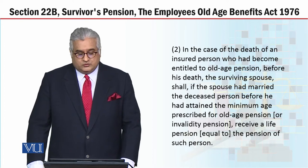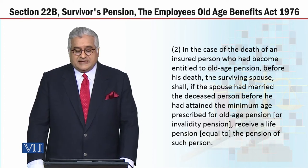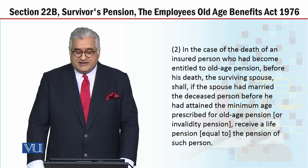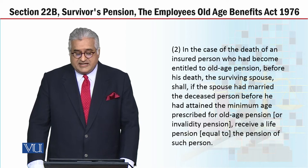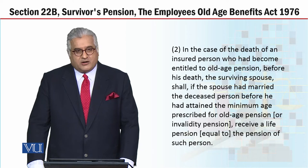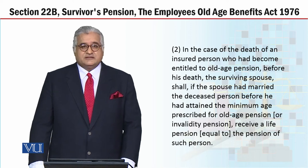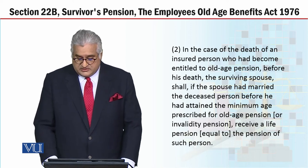Subsection 2: in the case of the death of an insured person who had become entitled to old age pension before his death, the surviving spouse shall, if the spouse had married the deceased person before he had attained the minimum age prescribed for old age pension or invalidity pension, receive a life pension equal to the pension of such person, my dear student.